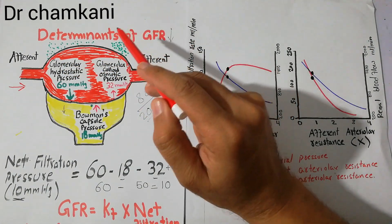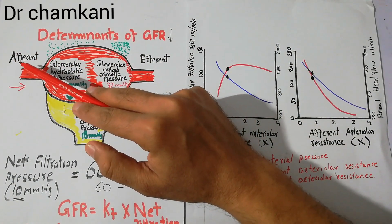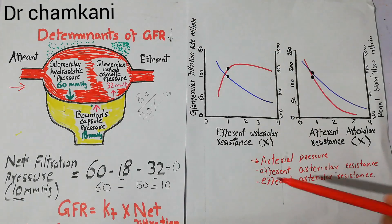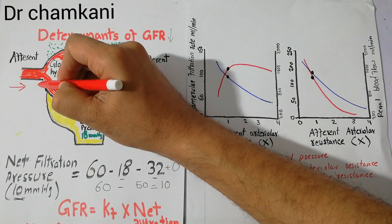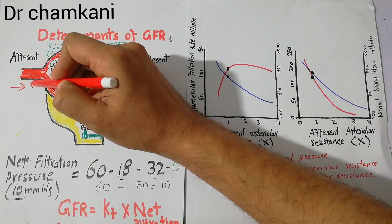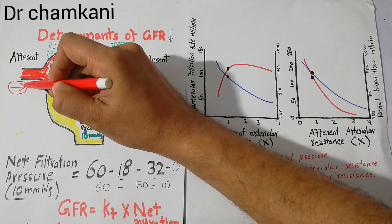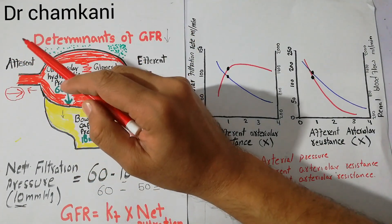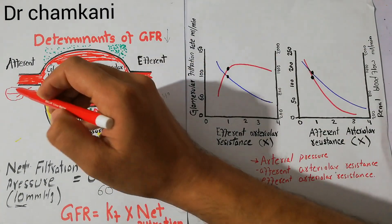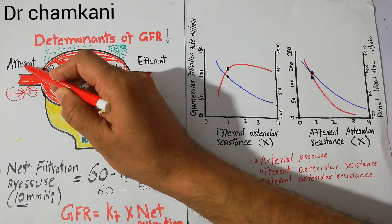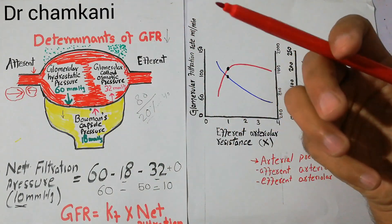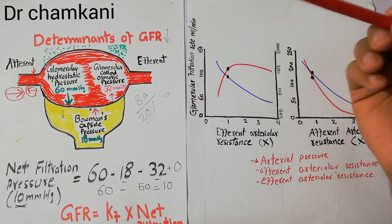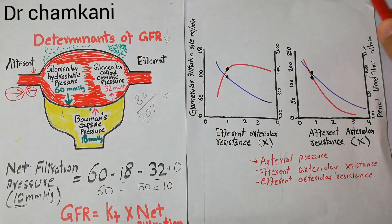Two more factors play an important role: afferent arteriolar resistance and efferent arteriolar resistance. Afferent arteriolar resistance is the resistance — the force basically stopping the movement of blood in the afferent arteriole. The arterial pressure was pushing blood through the afferent arteriole, but afferent arteriolar resistance opposes that movement. Its effect on blood flow and GFR is plotted on a graph showing renal blood flow and GFR against afferent arteriolar resistance.